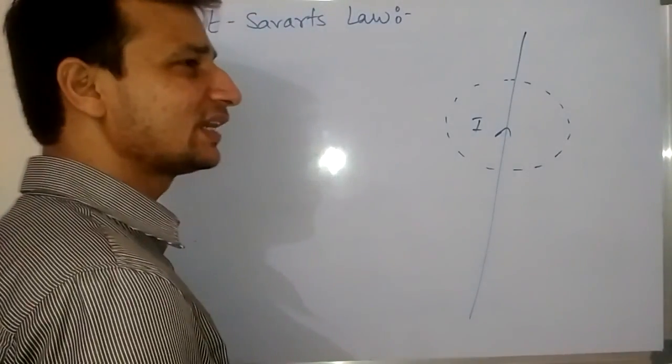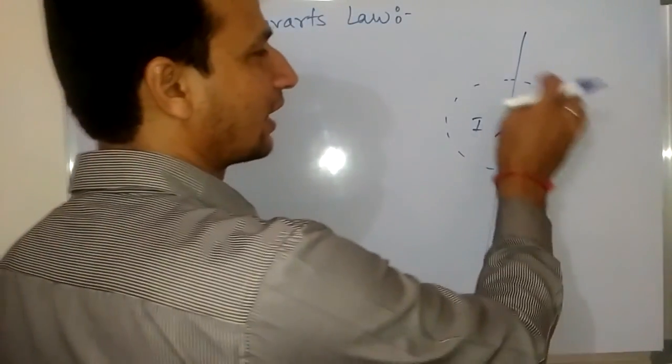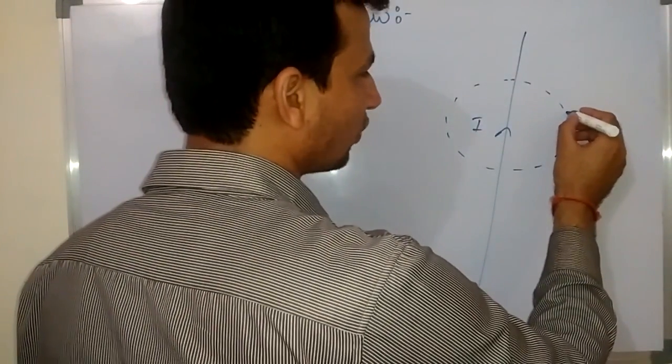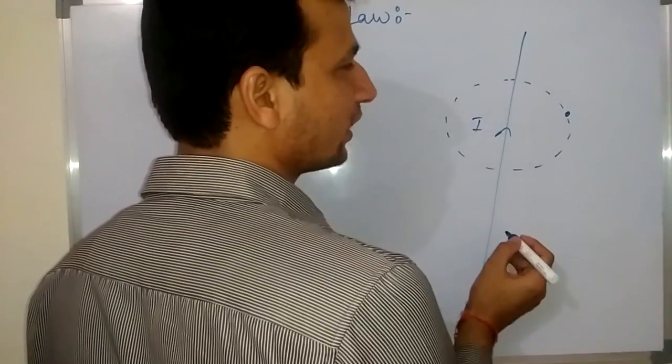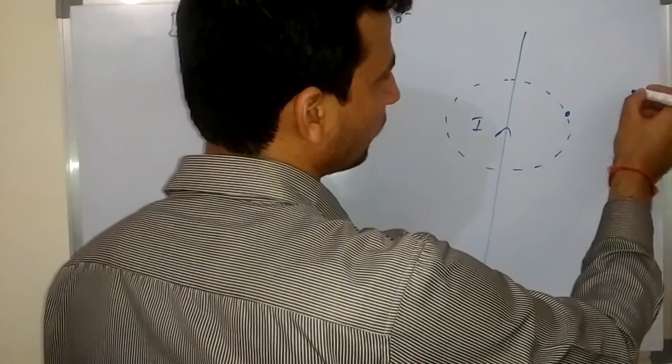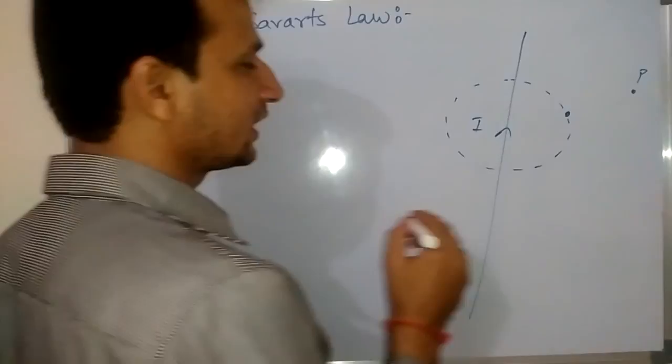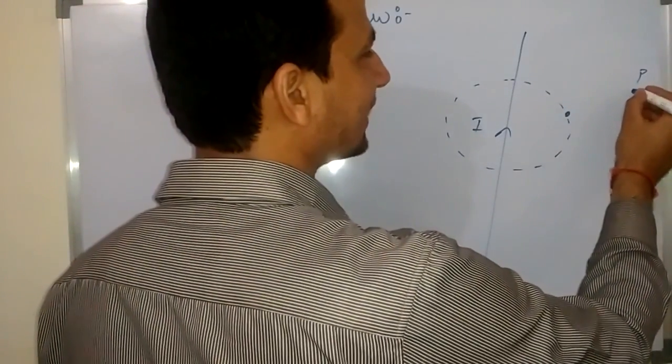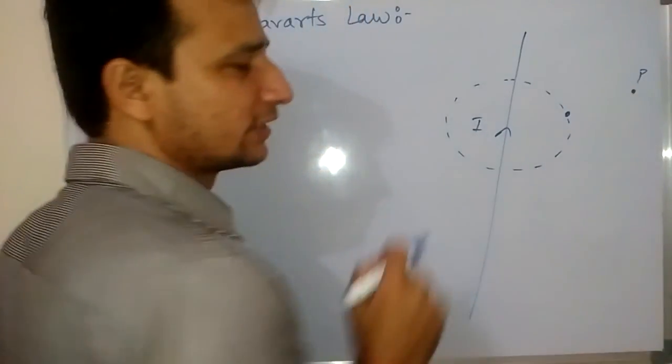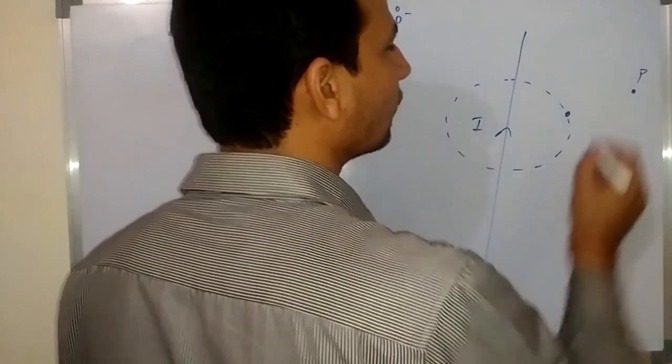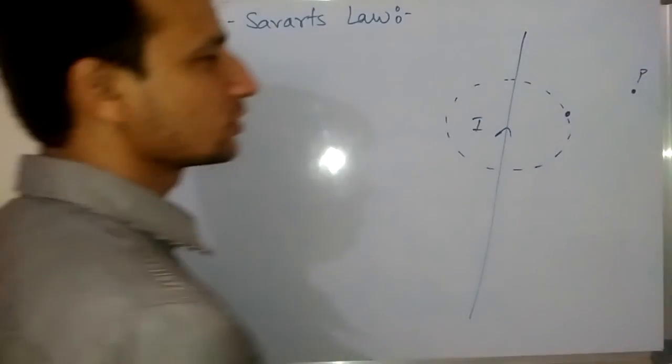If there are magnetic field lines around the conductor, there must be strength of magnetic field at these points or at any point P. My question is, what will be the strength of magnetic field at this point? To find the strength of magnetic field we can use Biot-Savart's law.